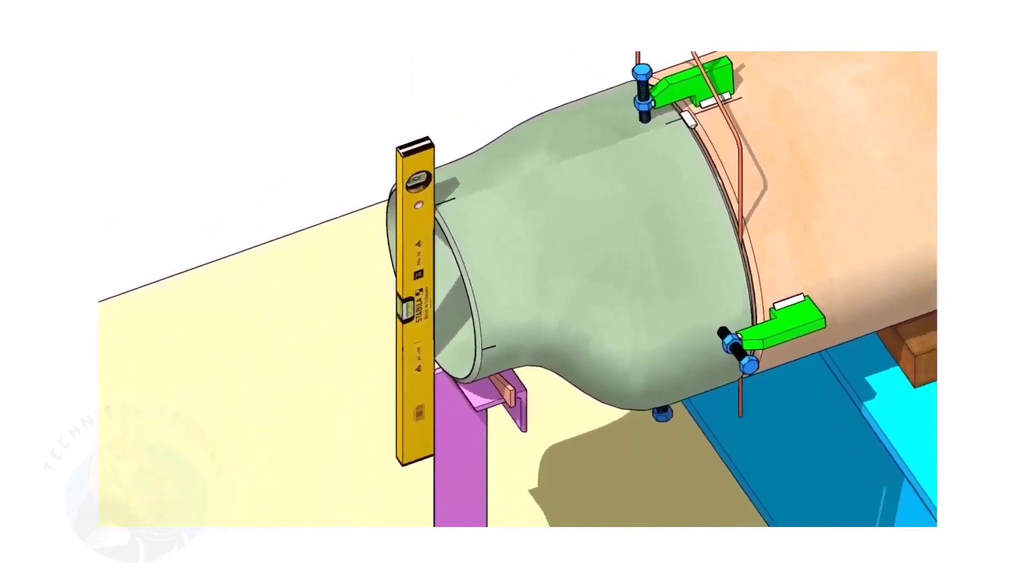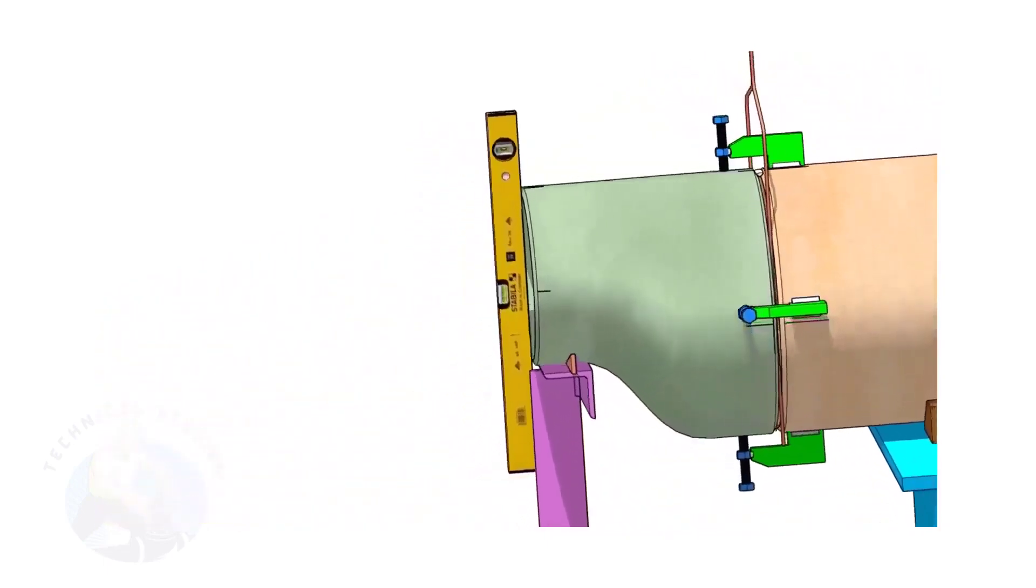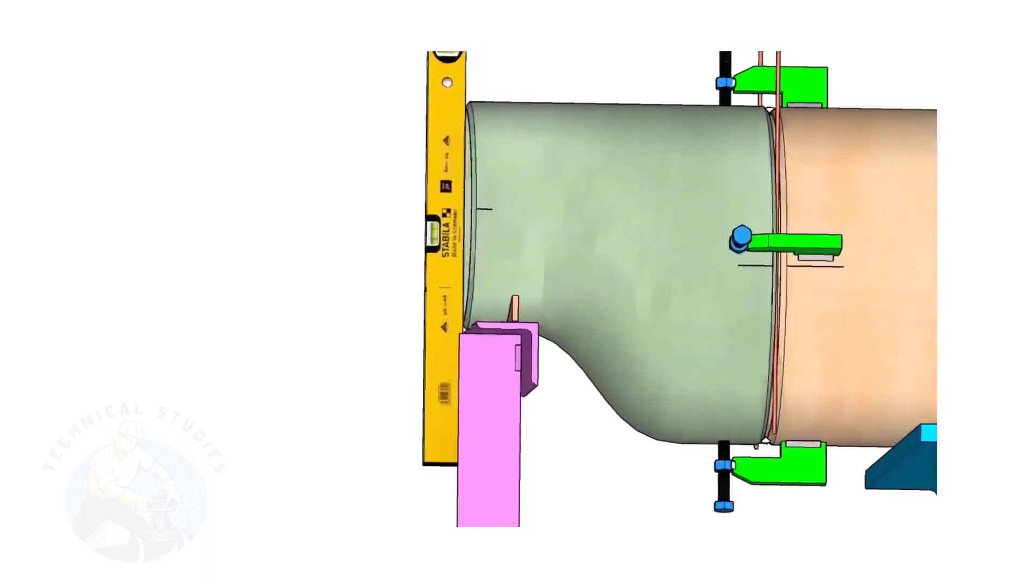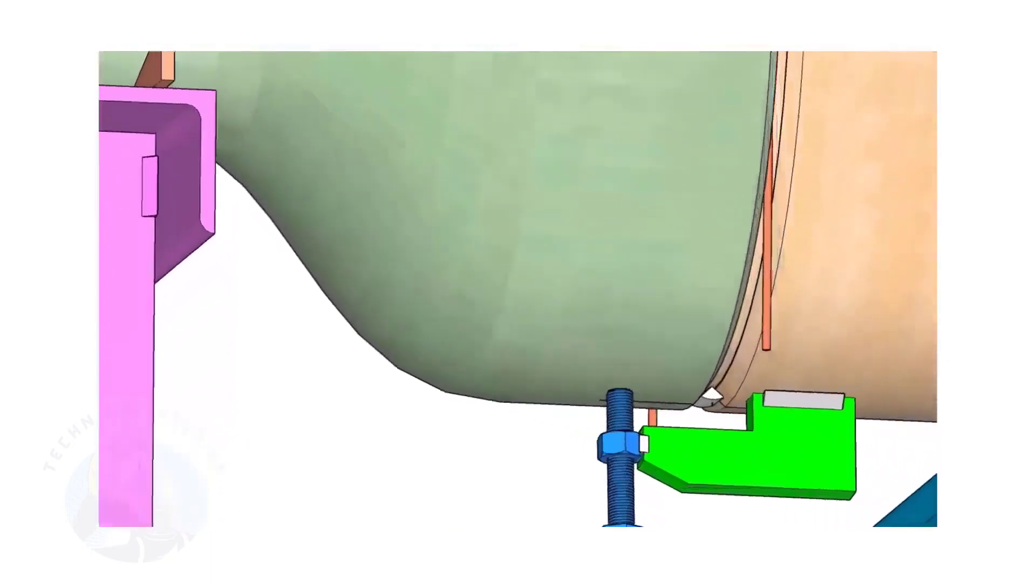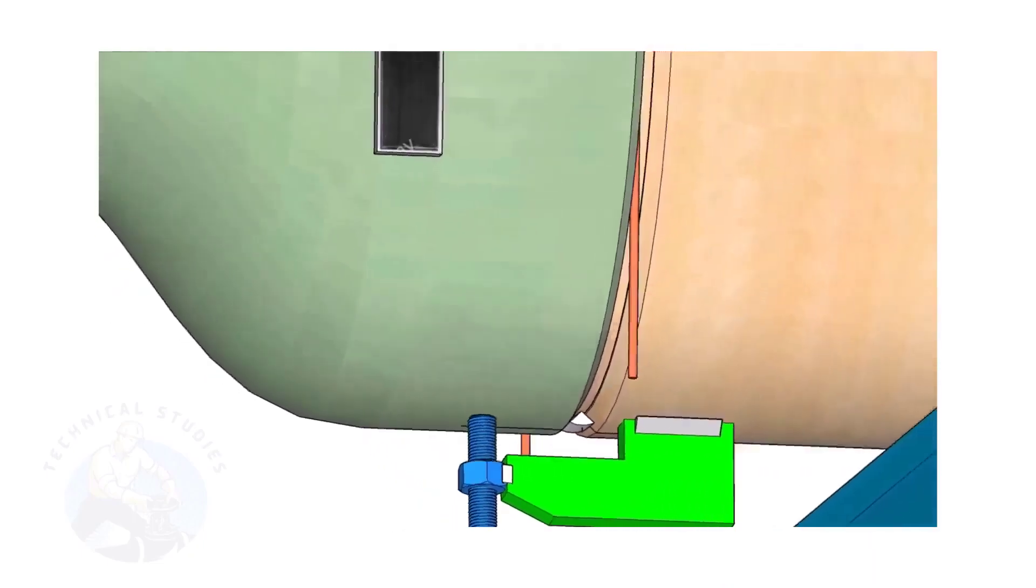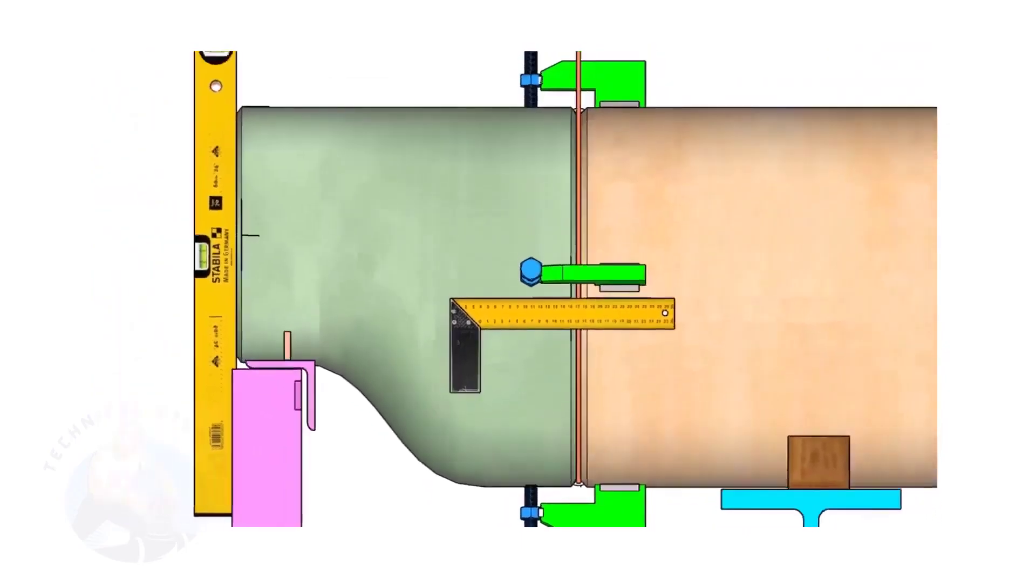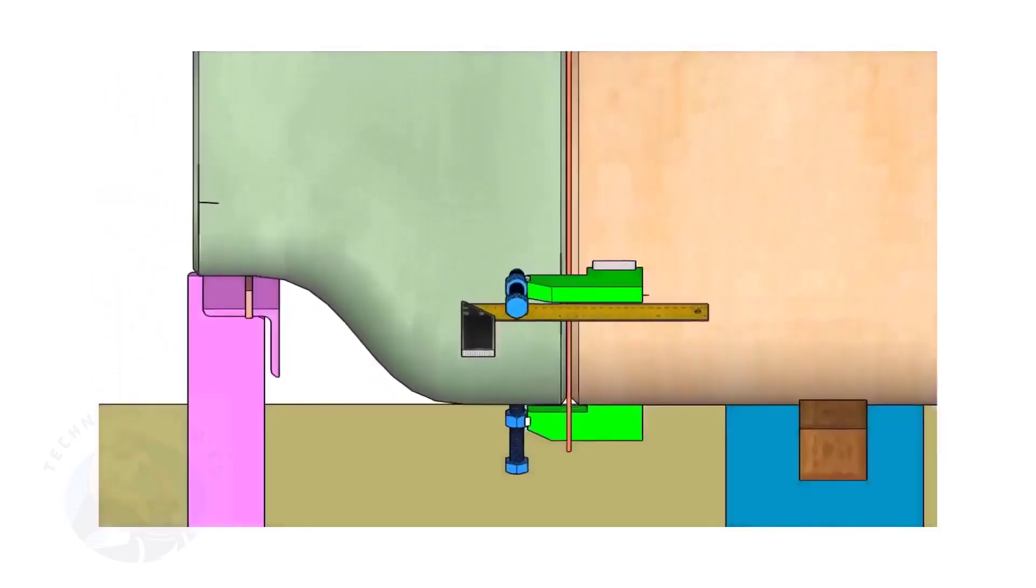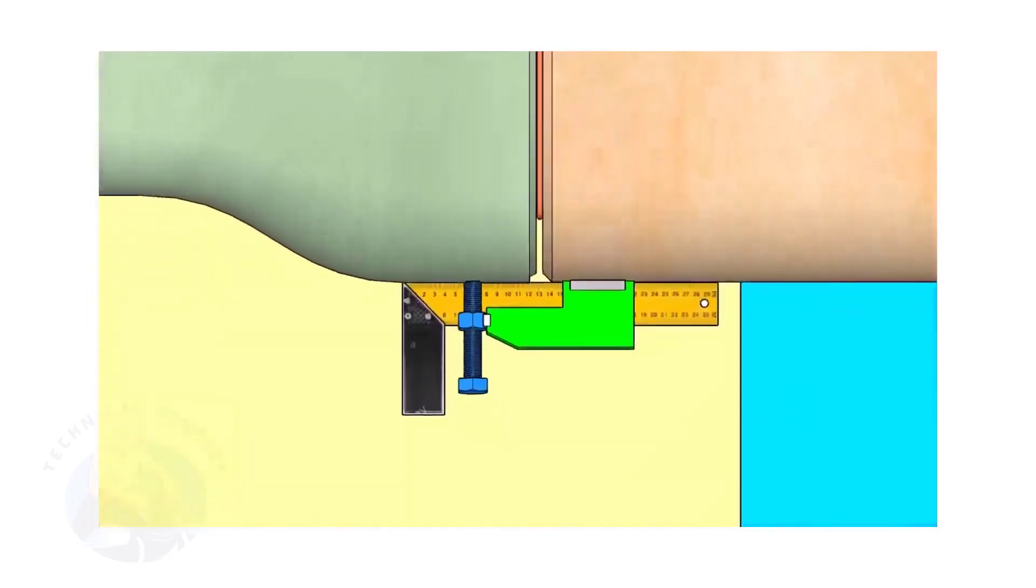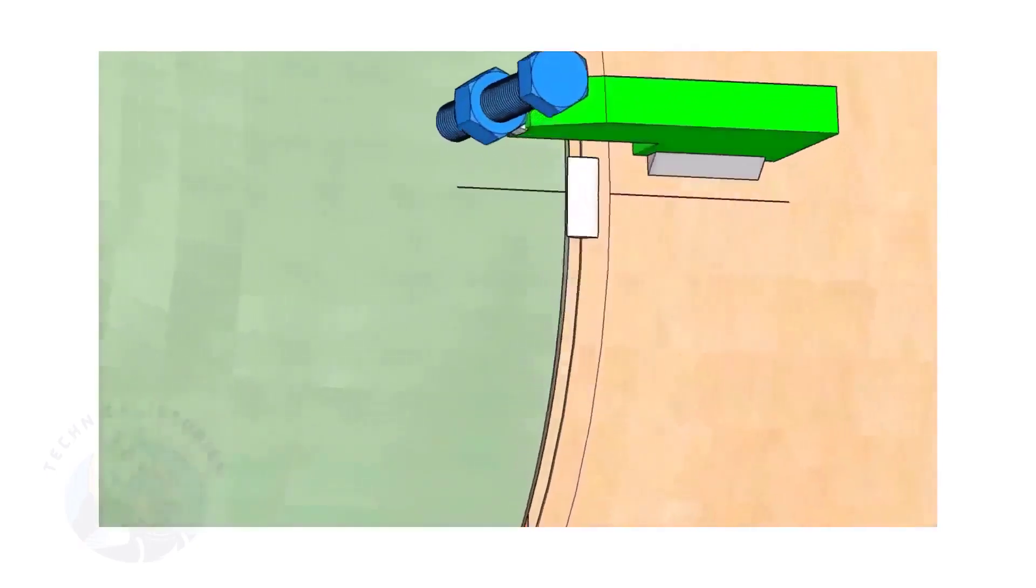Correct the levelness of the outer face of the reducer. Tack weld in the bottom side of the joint. Correct the straightness of the joint on both sides. If required, remove the gap rod. Tack weld on both sides.